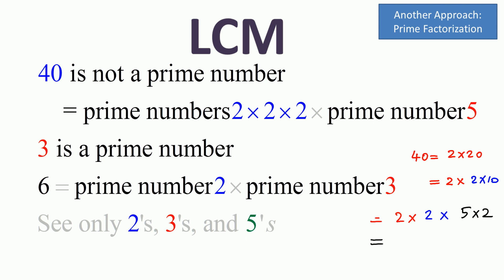How about 3? 3 is already a prime number. How about 6? 6 is not a prime number, so you have to break it down: prime number 2 times prime number 3.